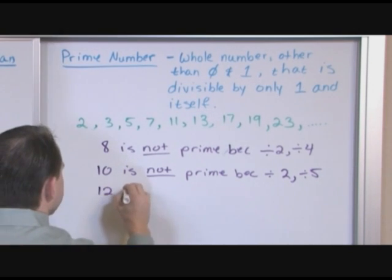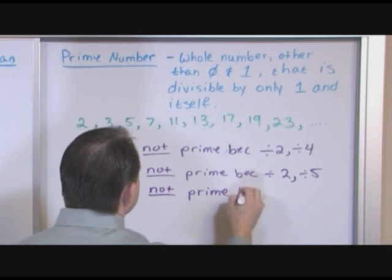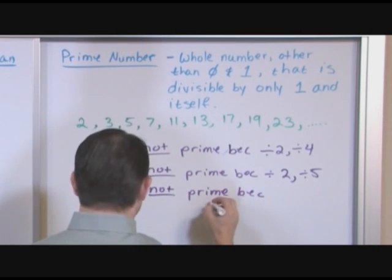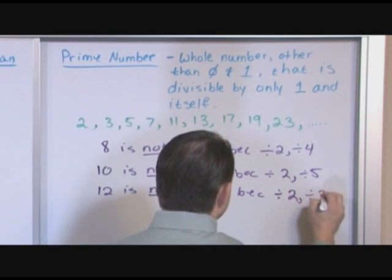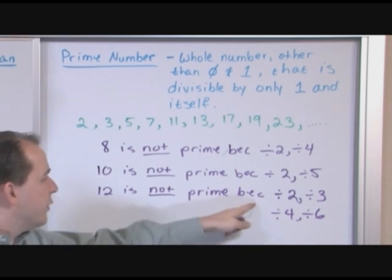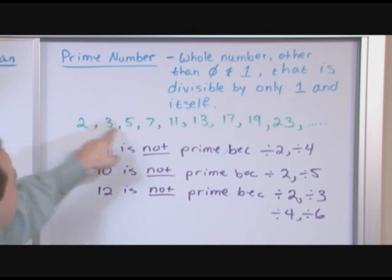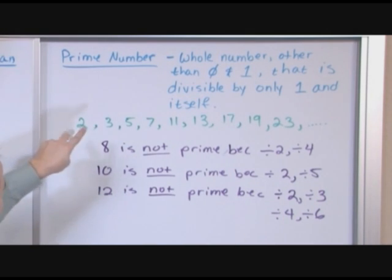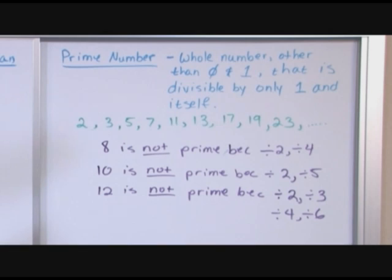The number twelve is not prime because you can divide it by a whole lot of numbers: two, three, four, and six. You see, the higher up you go in numbers, you're usually going to be able to divide by lots of different numbers evenly. But every number in the prime list can only be divided by one and itself. Also notice that prime numbers exclude zero and one from being prime by definition.